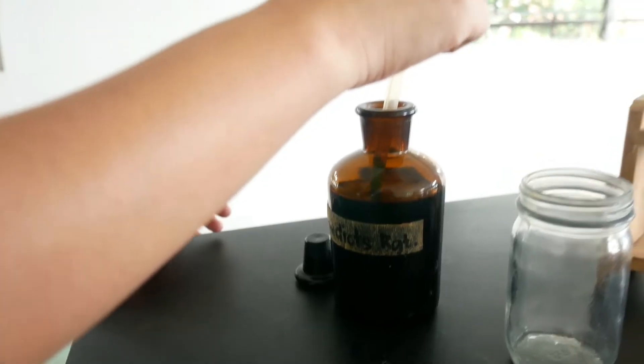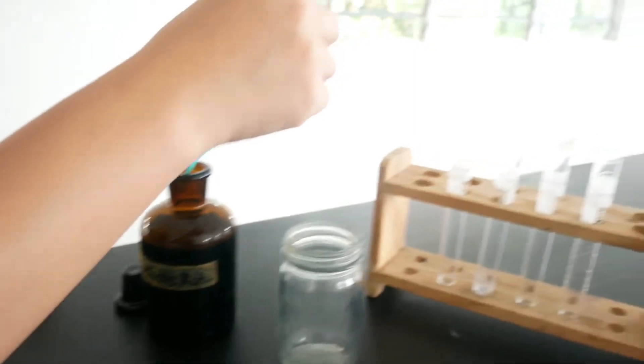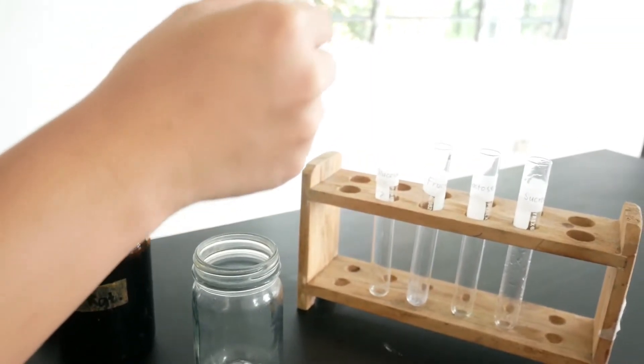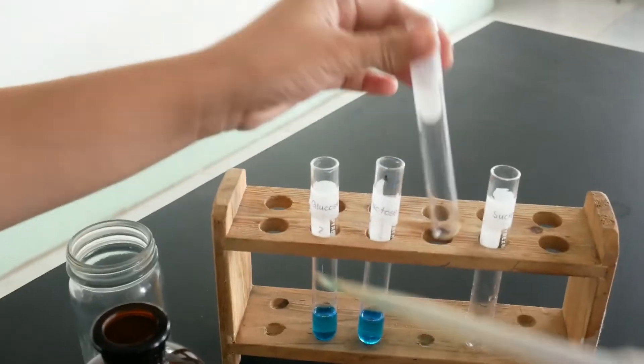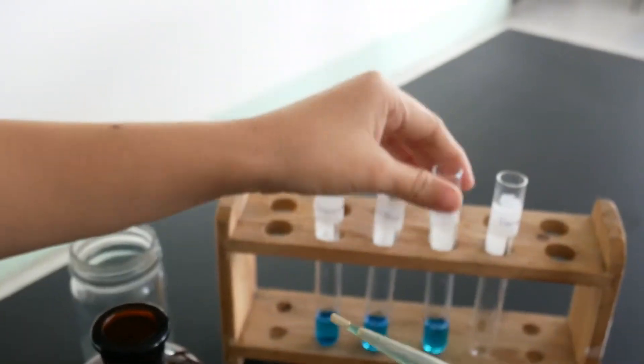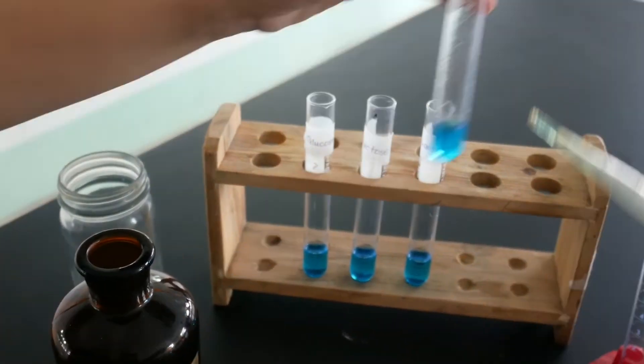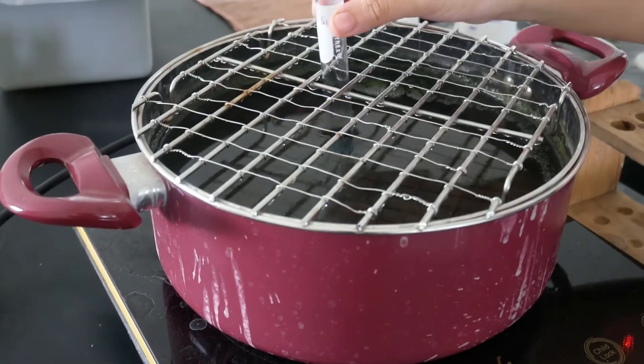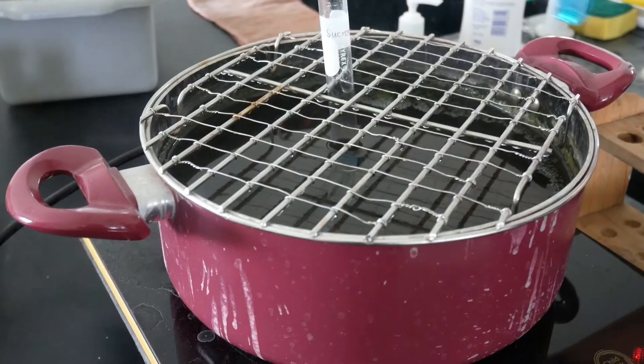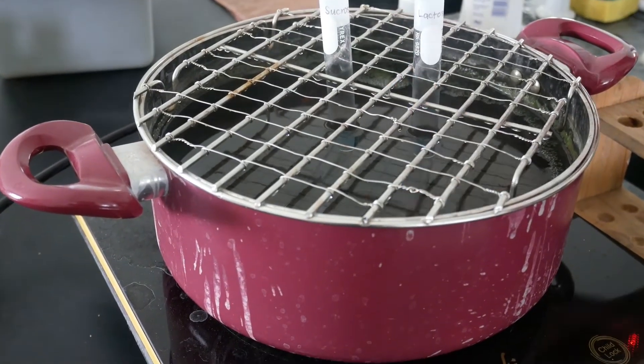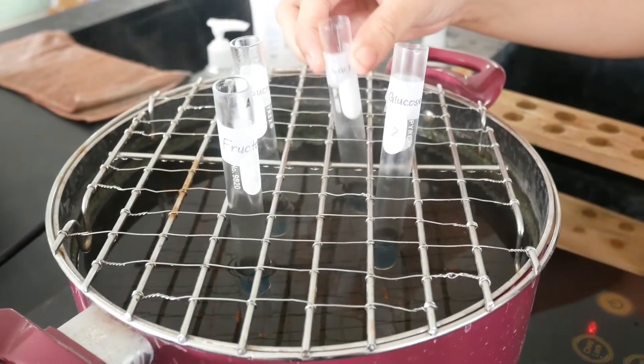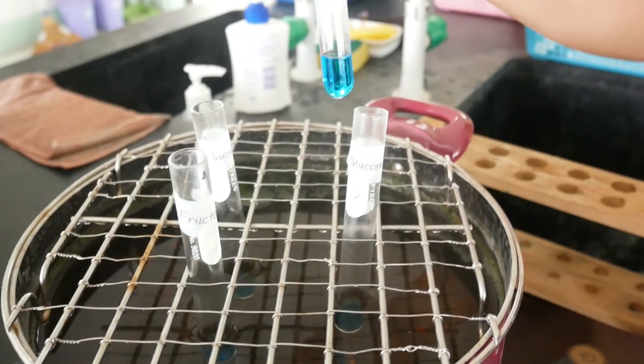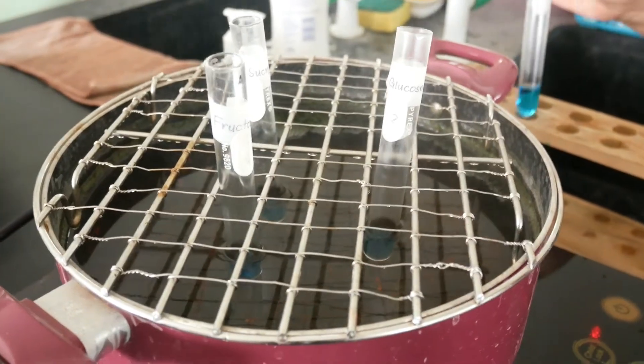Our next test is Benedict's Test, a test for reducing sugars. To do this, about 2ml of Benedict's solution is added to 4 empty tubes and then placed into a water bath for 30 seconds. If the solution remains clear blue, we can continue with the test which means the reagent is not contaminated.